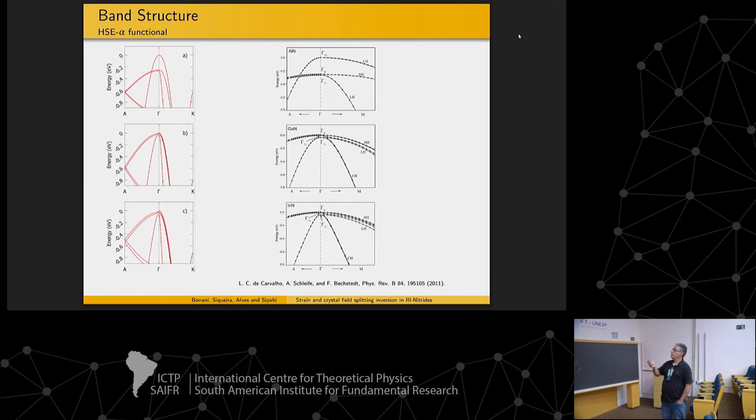And these are GW calculations from the literature. So we have a feature similar here. Here we are almost there, and here the same. We have this small difference from the others, but this doesn't complicate our calculations.